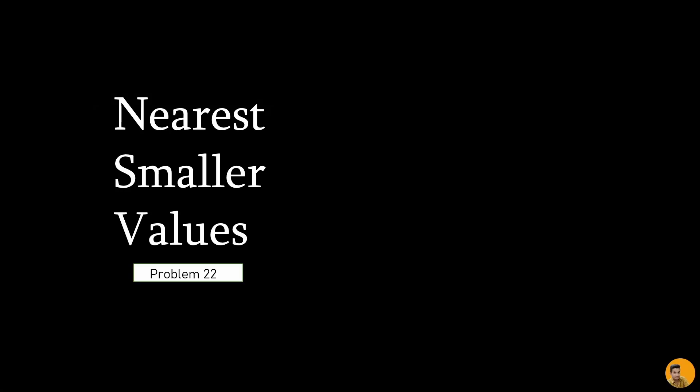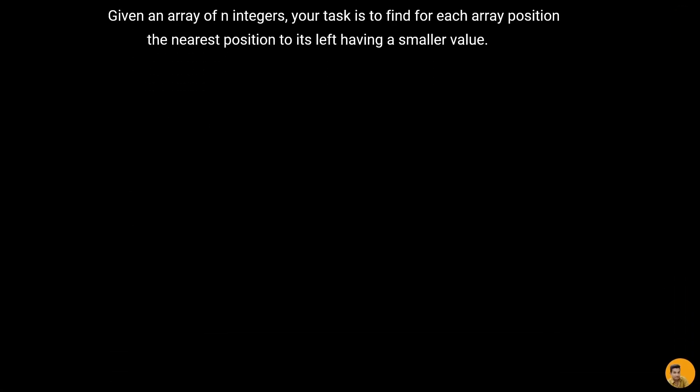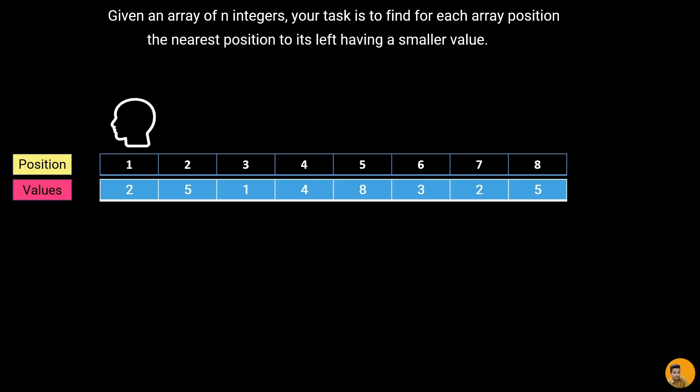Welcome back to the channel. Let's solve the problem 'Nearest Smaller Values.' In this problem we are given an array of N integers, and our task is to find for each array position the nearest position to its left having a smaller value. We need to display that nearest position to the left having a smaller value. Let's look at an example.